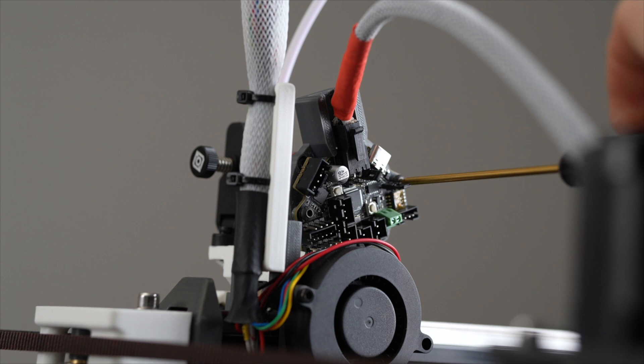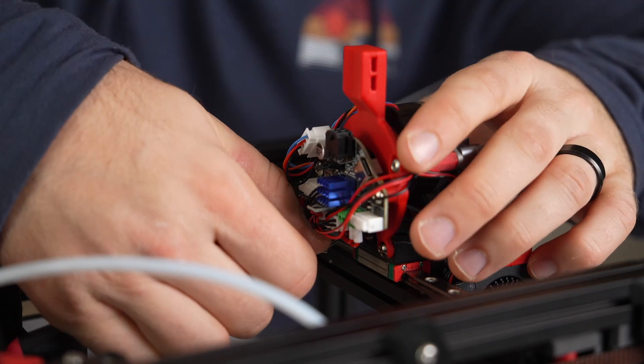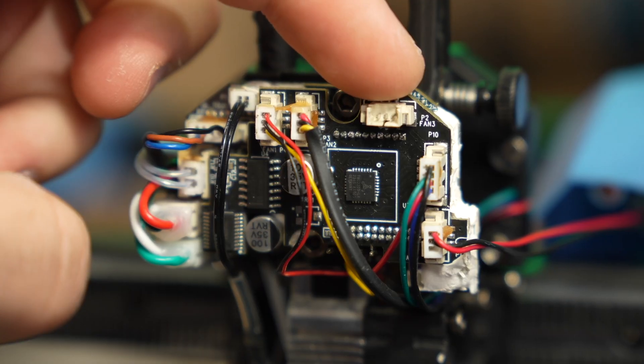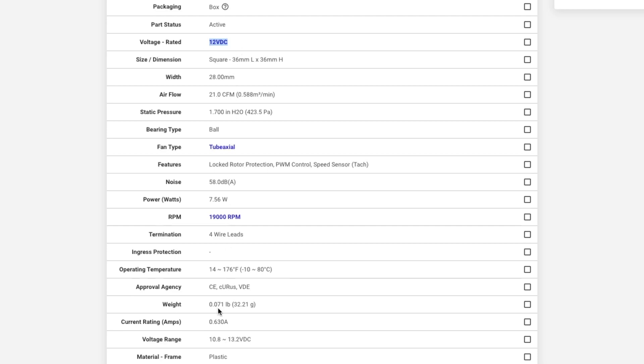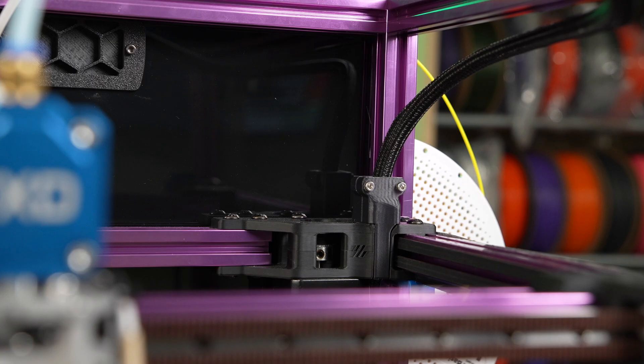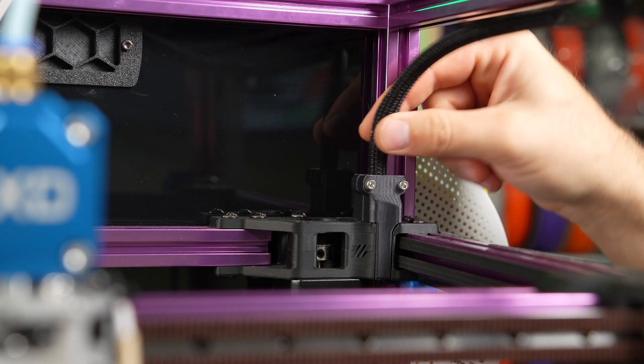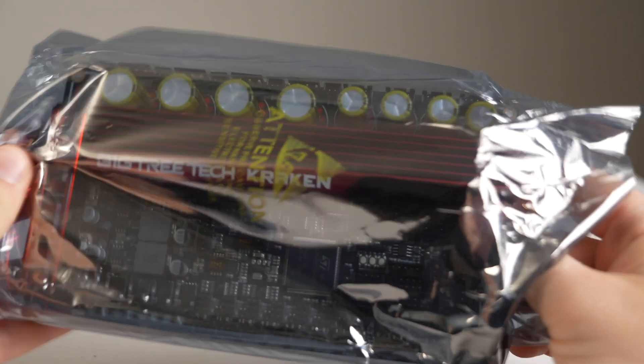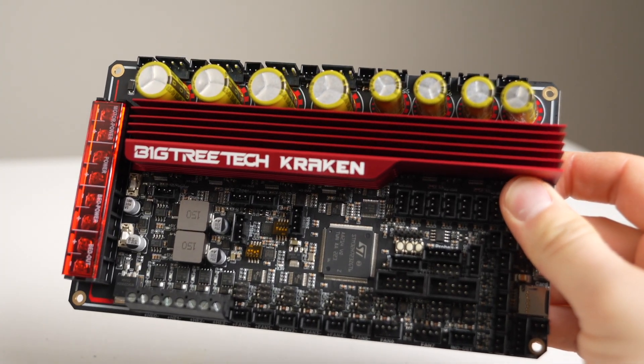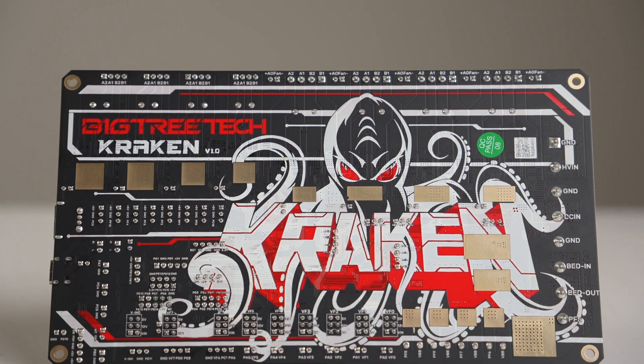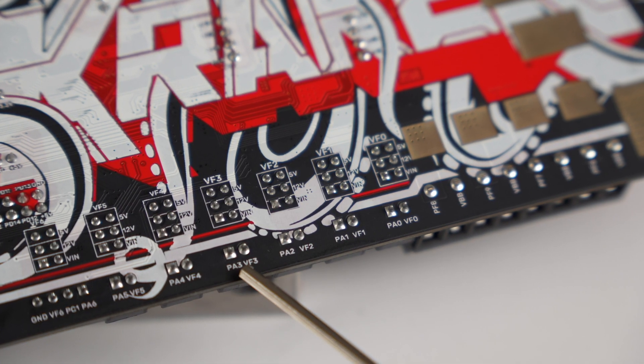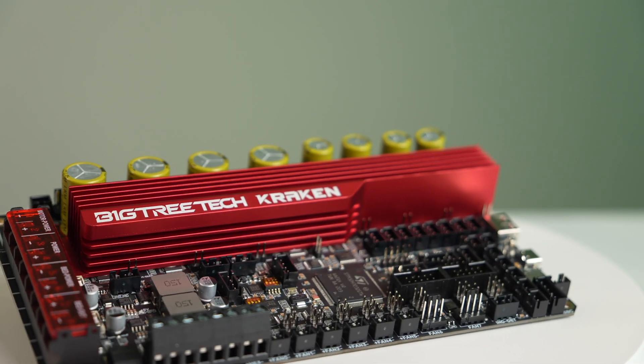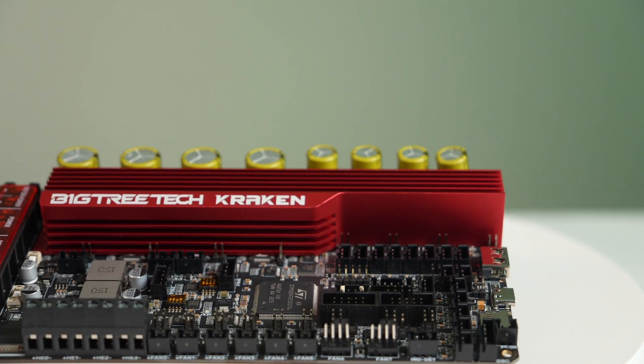My initial plan was to go with a toolhead board, as I've fallen in love with the cleaner wiring and simple swapping or replacing that comes with them. However, the Delta fans running at 12 volts made this near impossible given existing boards, so I ran all cables from the toolhead down to the controller. As for the controller, I replaced the Fysetc Spider with the BigTreeTech Kraken. We covered this board some months back, and it has more than enough connectivity for everything we need now, with plenty left over for future upgrades.